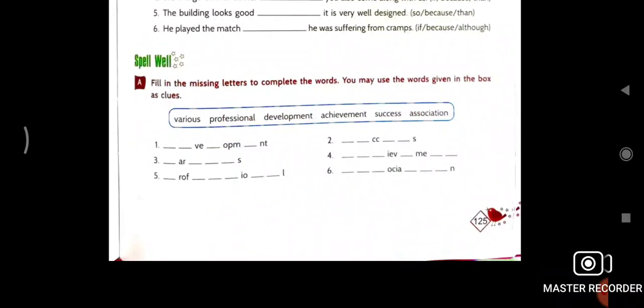After that, spell well. Here some missing letters are there. You have to complete it. And in the box already given. So first one, there are two gaps. V, E, then gap, O, P, M, then gap and D. So check which one will be. Check, development. Like this you have to complete. Two, six.